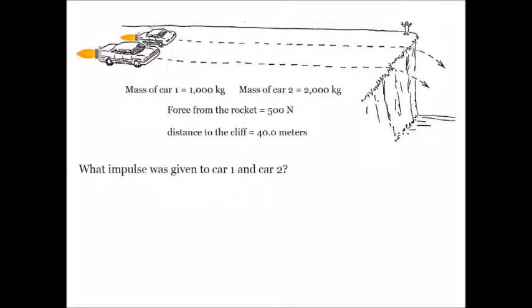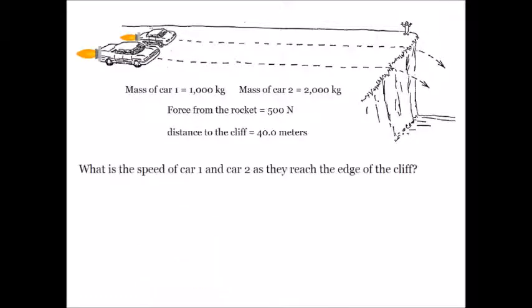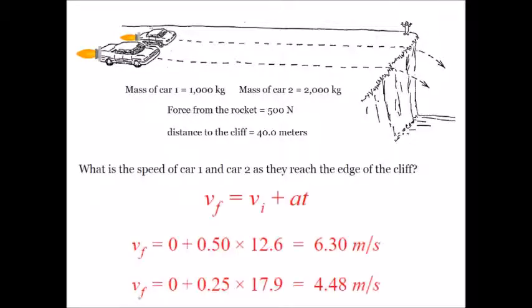What impulse was given to car one and car two? Impulse J is equal to force times time — a constant force of 500 newtons times those two time values. For final velocity, using the first kinematic equation, final velocity equals initial velocity plus acceleration times time. The smaller car has a bigger acceleration for a shorter amount of time competing against the smaller acceleration for a longer time, and car one wins — it's going faster as it reaches the edge of the cliff.